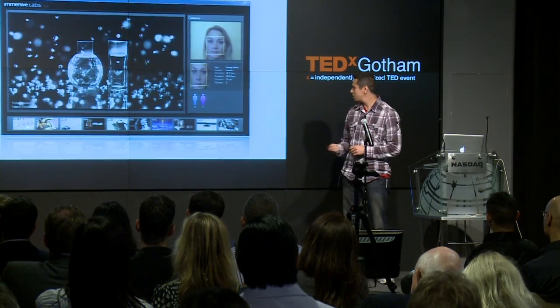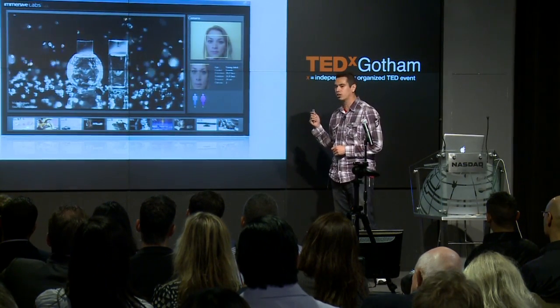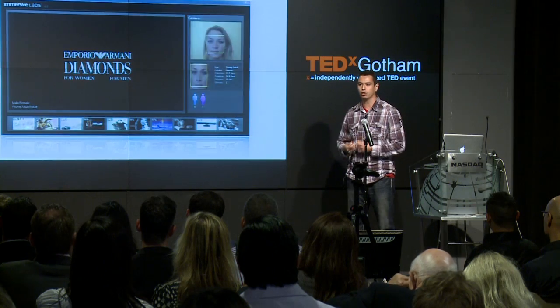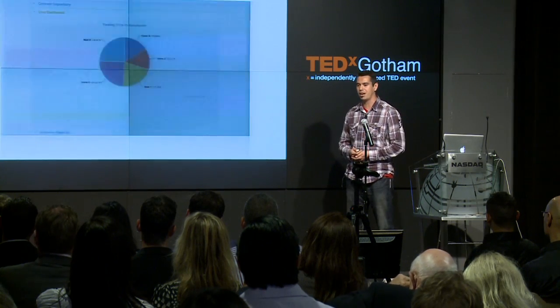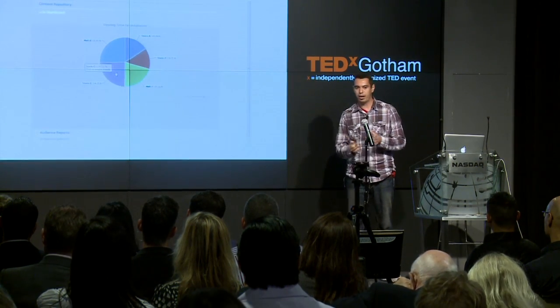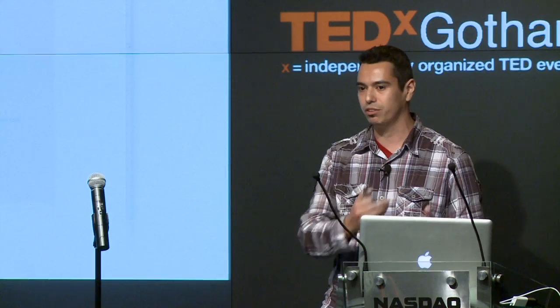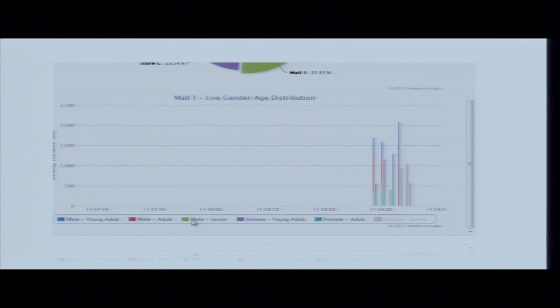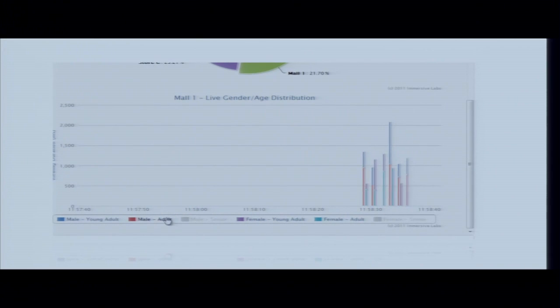One interesting thing to note is that the system actually learns based on who looks at it and who doesn't. It's a learning system that isn't necessarily tailored so that men only see male ads and females only see female ads. It's going to be based on a number of variables, including weather, the time of day, and the day of the week — taking the methodology applied online and bringing it to the offline world.